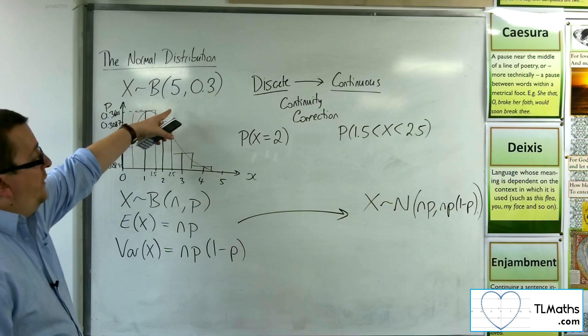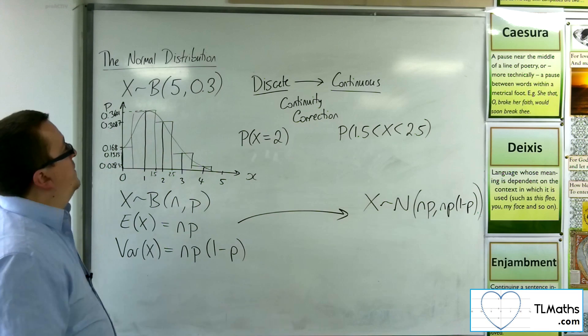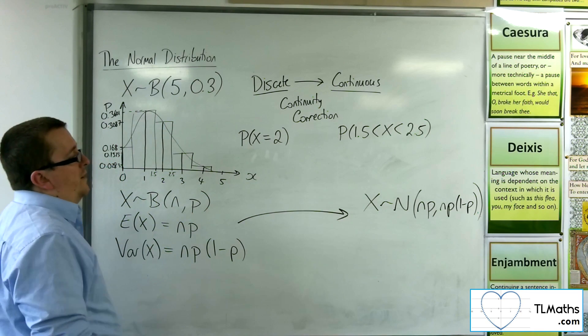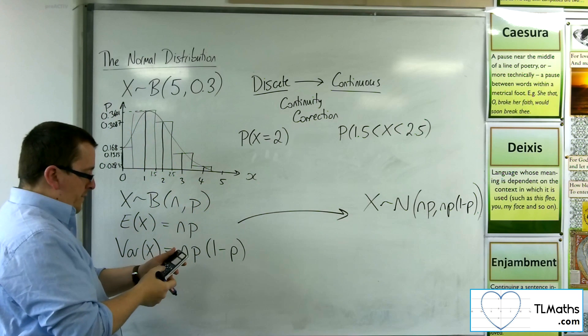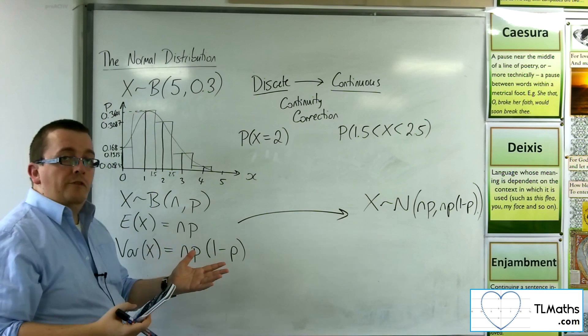Now, in this example here, what you would then have is 5 times 0.3, which is 1.5, and then 5 times 0.3 times 0.7, which is 1.05.